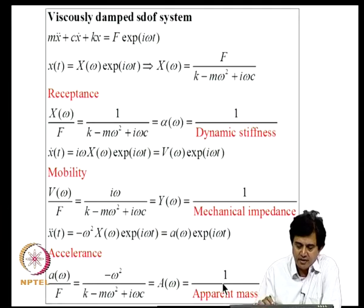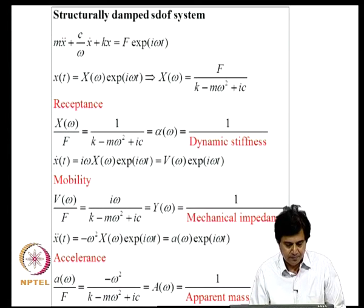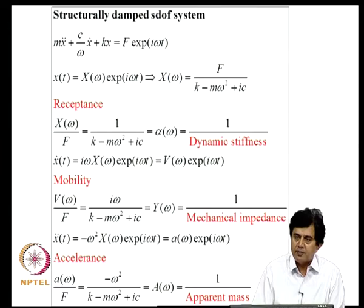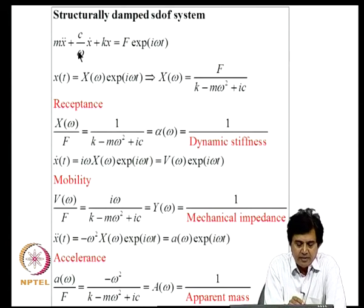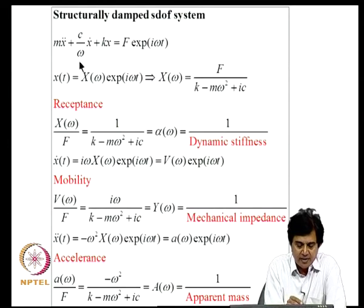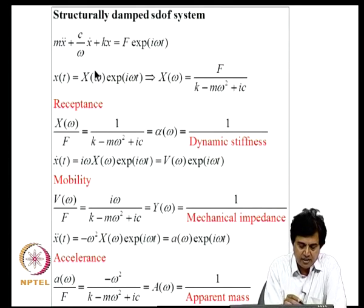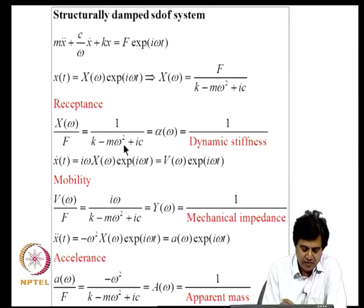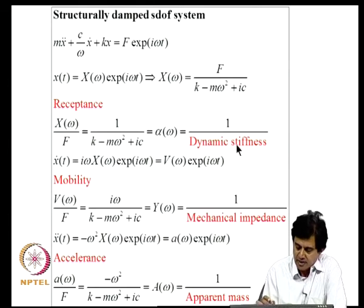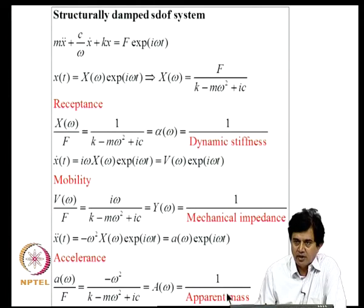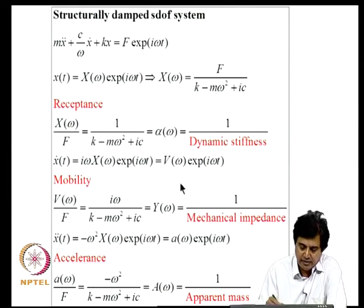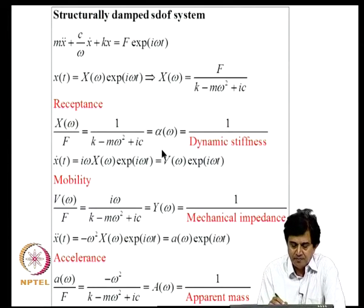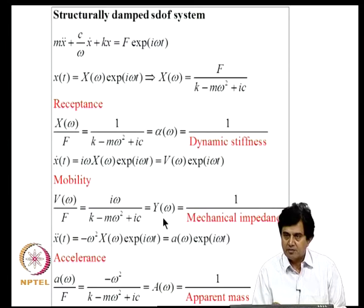For structurally damped systems, the damping term takes the form (C/omega)·X-dot + K·X, or equivalently a complex stiffness. The expressions for receptance, mobility, and accelerance follow straightforwardly, and they automatically define dynamic stiffness, mechanical impedance, and apparent mass. The derivation is straightforward if you follow the viscously damped system derivation.